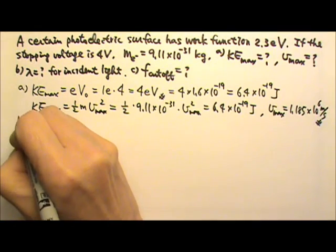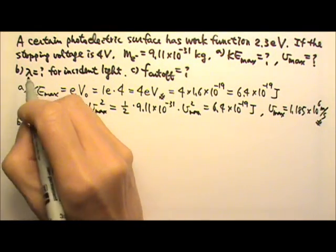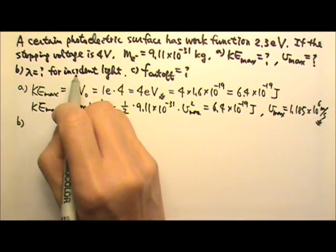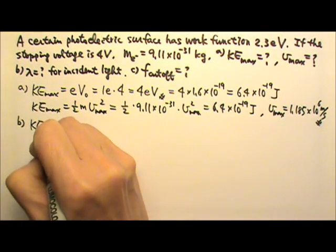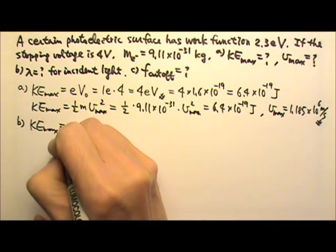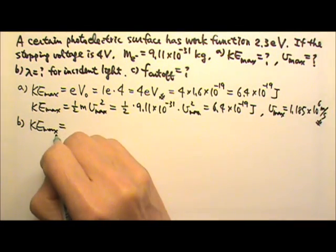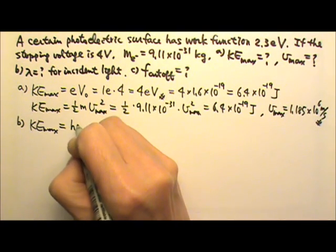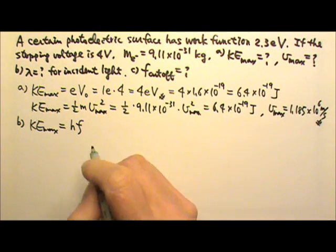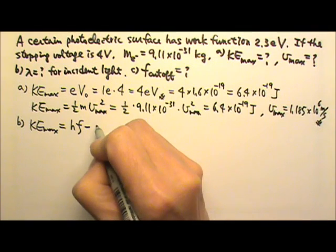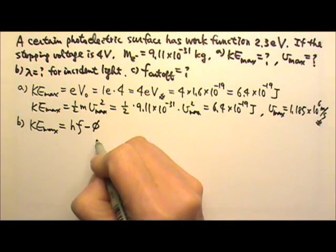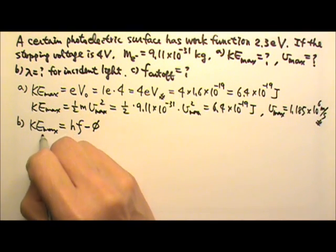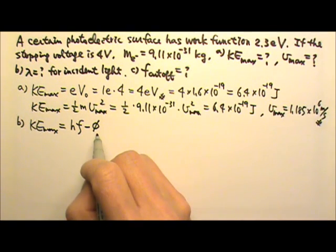Part b: find the wavelength. First, find the frequency of incident light. Maximum kinetic energy is leftover energy. When an electron catches a photon, it gets energy hf, but must use some to overcome the work function. So maximum kinetic energy = hf - φ.